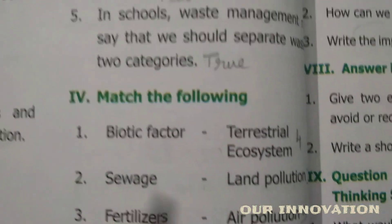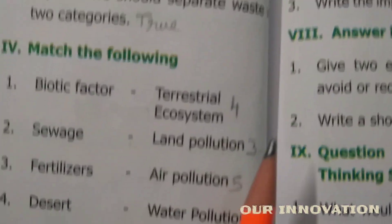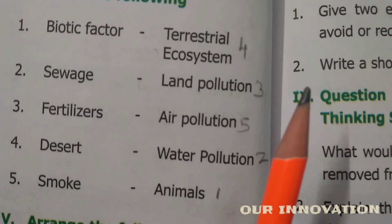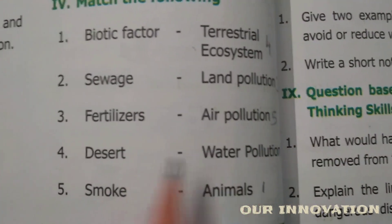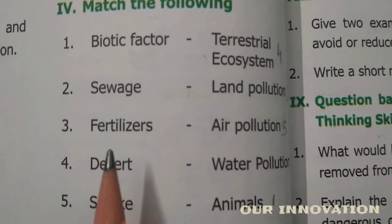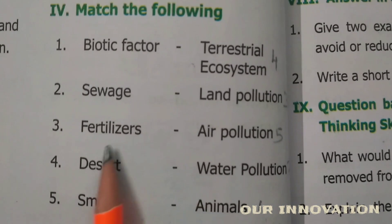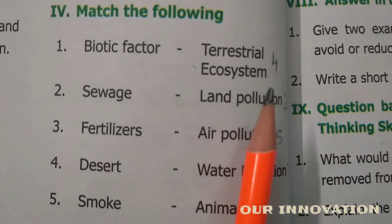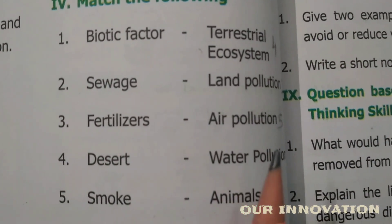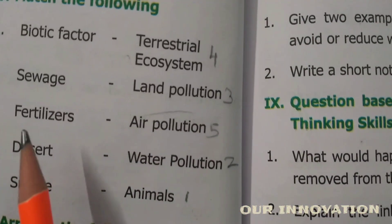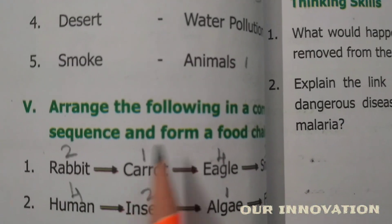Roman numeral four — match the following. Biotic factor: animals. Sewage: water pollution. Fertilizers: land pollution. Desert: terrestrial ecosystem. Smokers: air pollution. These are the correct matches.